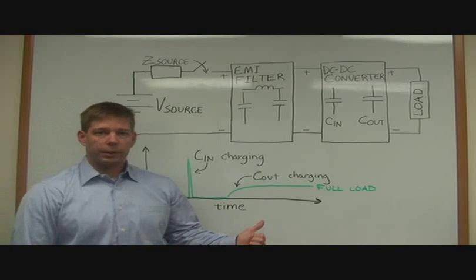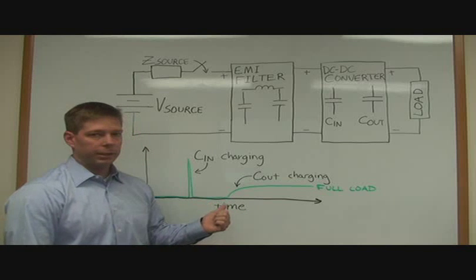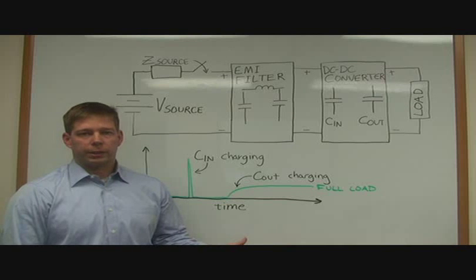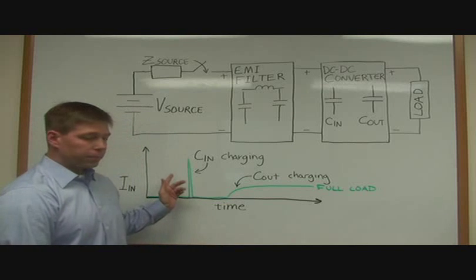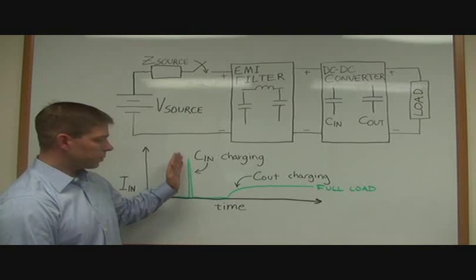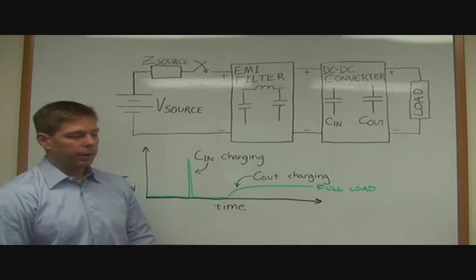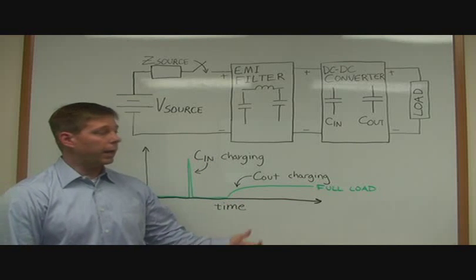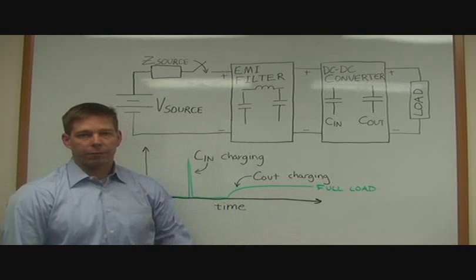The inrush current that occurs on the startup of a DC-to-DC converter system like this is composed of two regions. The graph here shows there's an initial spike in current that's caused by the charging of the input capacitance in the DC-to-DC converter and any capacitance in the EMI filter.